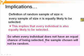So how can we use the result to help us solve problems? When every individual does not have an equal chance of being selected, it will imply that every sample will not have an equal chance of being selected, and therefore it will imply that the sample chosen is not random.